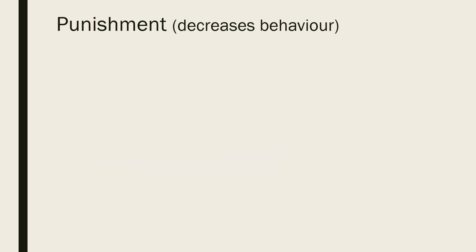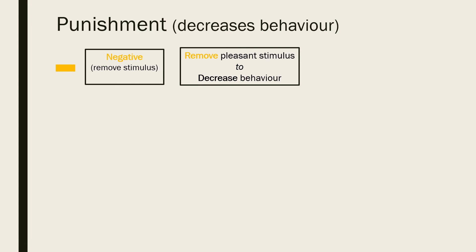The other way that punishment can decrease an undesired behaviour is via the removal of a desirable stimulus. This can be called negative punishment because, like negative reinforcement, something is being taken away. However, in this case we don't want the learner to repeat the behaviour, so the stimulus taken away is something desirable or pleasant. Because the learner's response is influenced by its negative cost — the withdrawal of a previously earned or future reinforcer — this type of punishment is also called response cost.